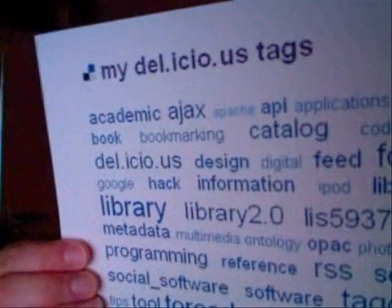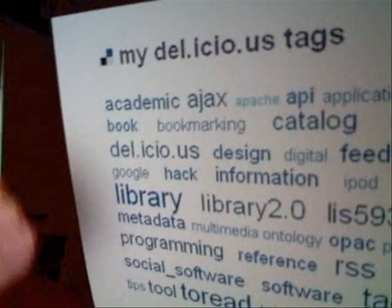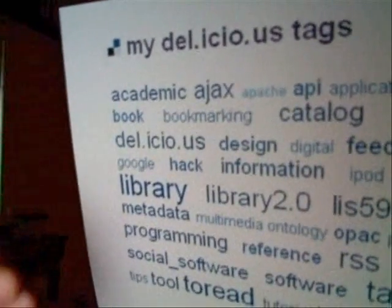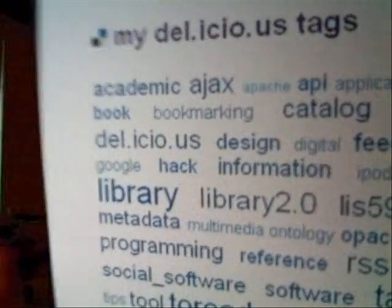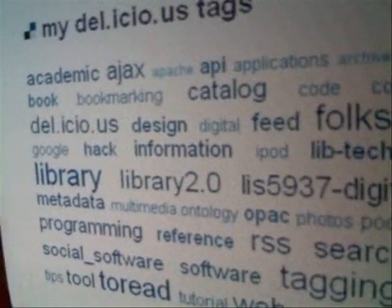Another interesting thing you can do is create a tag cloud. This allows you to quickly at a glance see what items you're tagging most often. For me it's typically the library, but you can see there are some different other class sites as well.